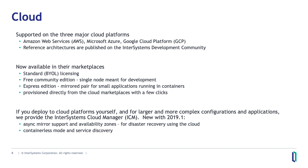The community edition provides a single node for development purposes, and the express edition provides a mirrored pair for production. Both of these are provisioned directly from the cloud marketplace of Azure, AWS, or GCP with a few clicks.